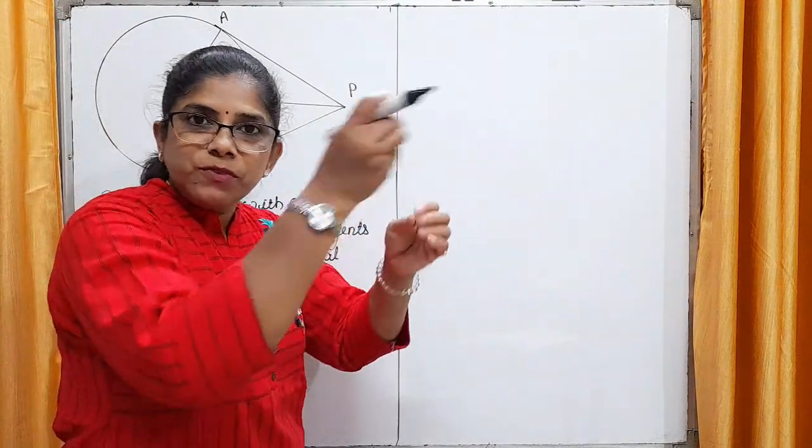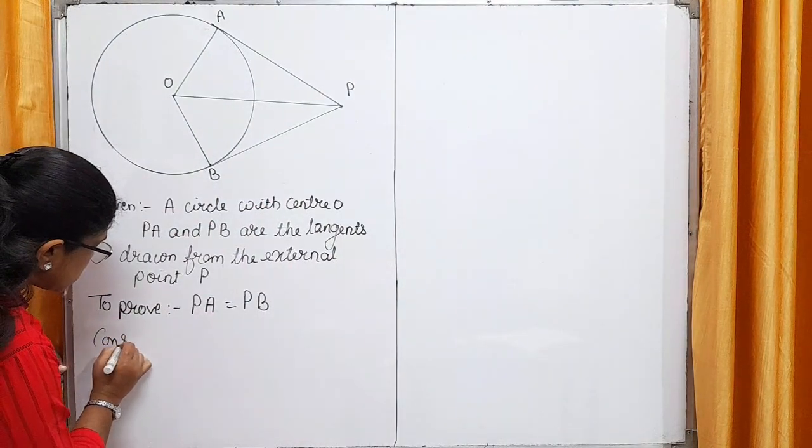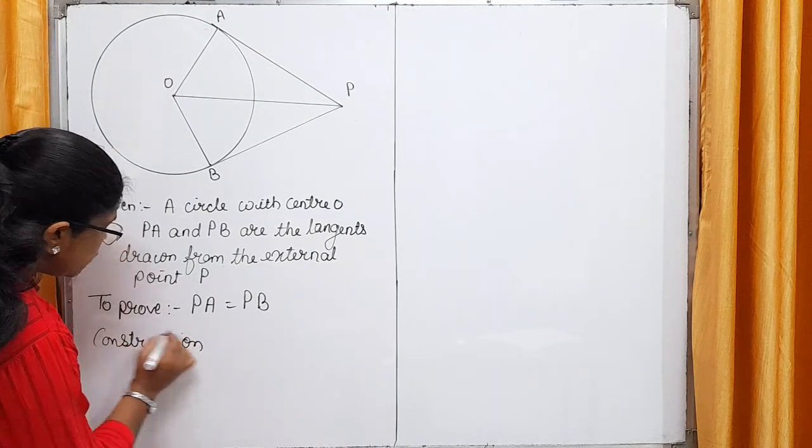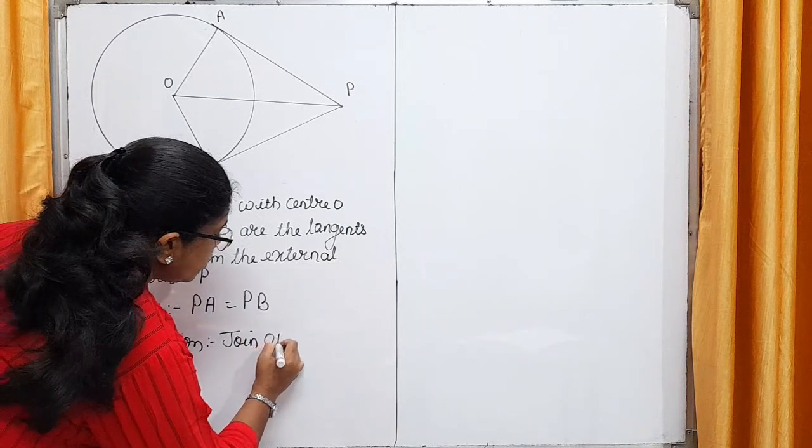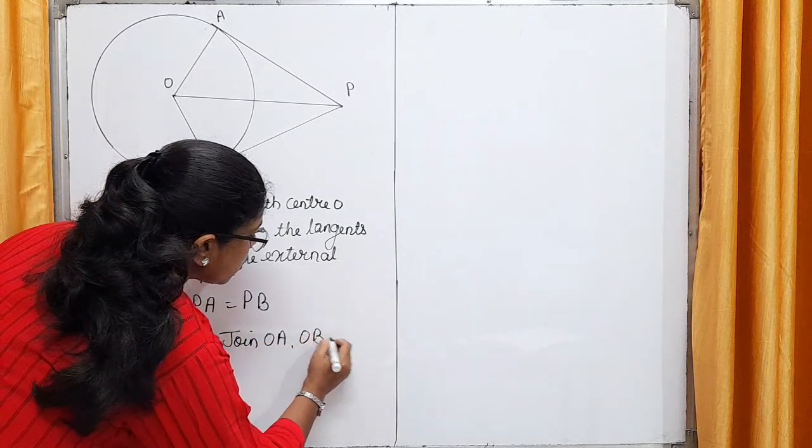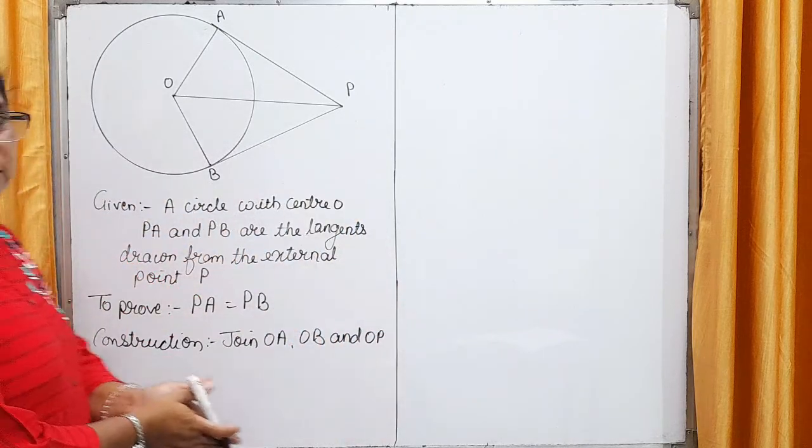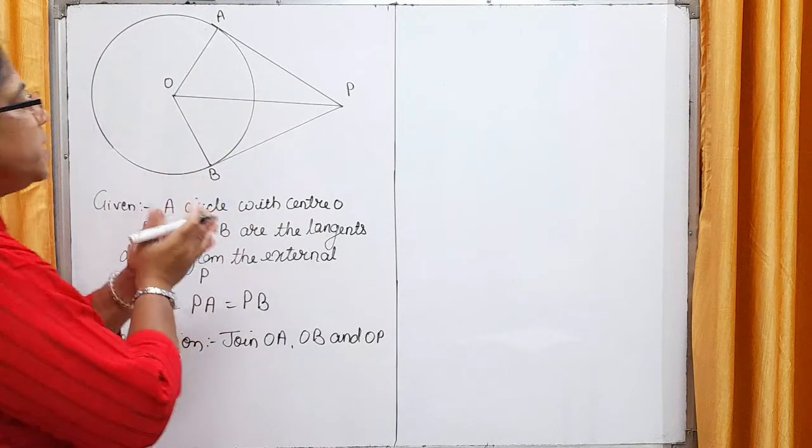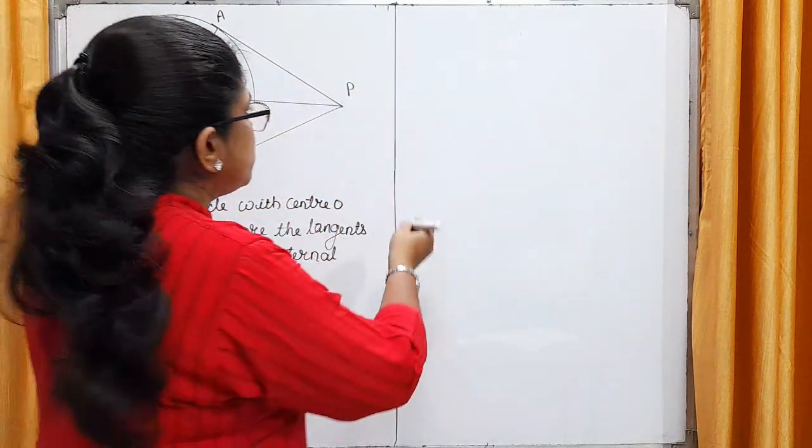Whenever we do construction, we have to write that. So, what construction did we do here? Join OA, OB and OP. Simple construction. Now, when we join this OA, OB and OP, we get two triangles. Let's start with our proof now.